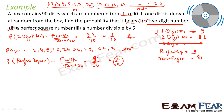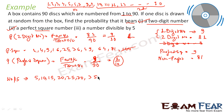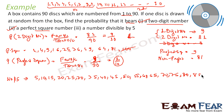Now find the probability of drawing a number divisible by 5. Numbers divisible by 5 between 1 and 90: 5, 10, 15, 20, 25, 30, 35, 40, 45, 50, 55, 60, 65, 70, 75, 80, 85, 90. Note that 95 is excluded as it is beyond 90.